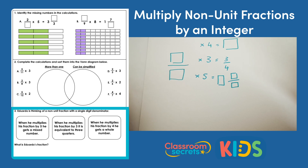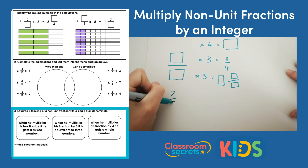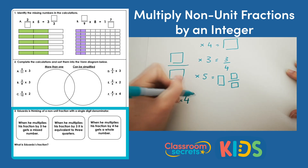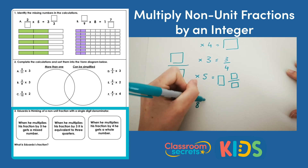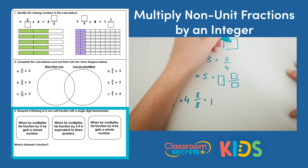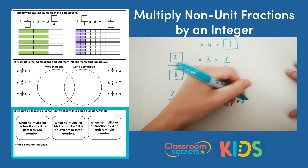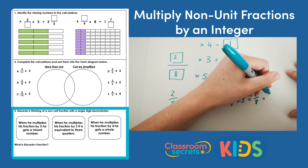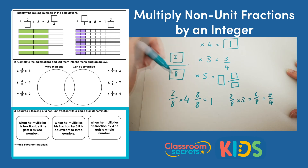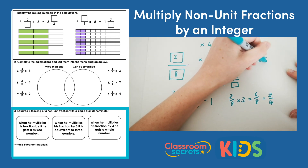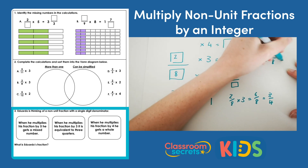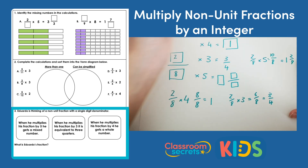The last clue is the main one to focus on. If I try 2 eighths times 4: 4 times 2 is 8, and 8 eighths equals 1 — that's a whole number. Then 2 eighths times 3 gives 6 eighths, which is the same as 3 quarters. And 2 eighths times 5: 5 times 2 is 10, so 10 eighths equals 1 and 2 eighths — that is a mixed number. So Eduardo's fraction is 2 eighths.